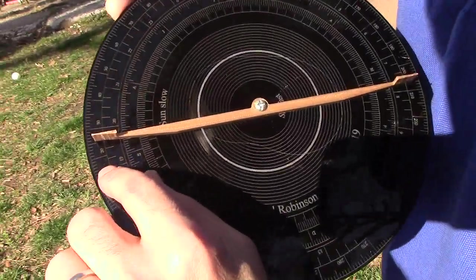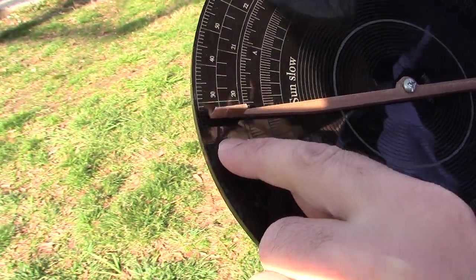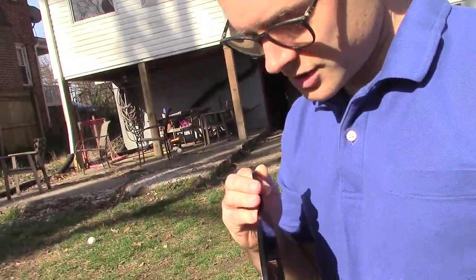Now if you read that, you can read that that looks like it's about 26 degrees. So the Sun right now is about 26 degrees of elevation into the sky.